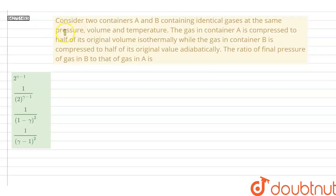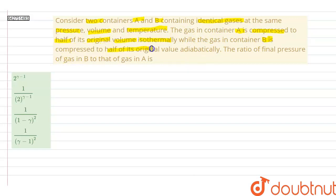Hello everyone. In this question we have considered two containers A and B containing identical gases at the same pressure, volume and temperature. The gas in container A is compressed to half its original volume isothermally, while the gas in container B is compressed to half its original value adiabatically. We have to calculate the final pressure for gas A and B and find the ratio between them.